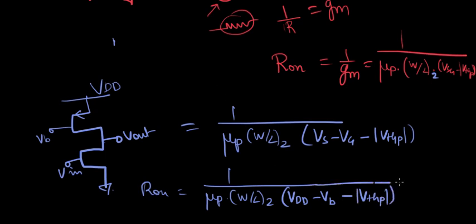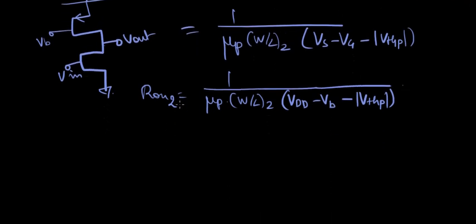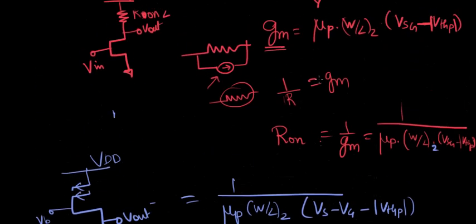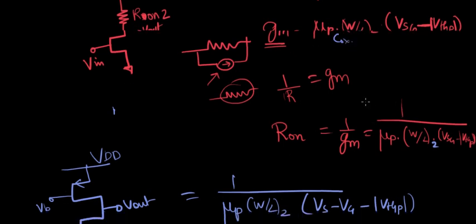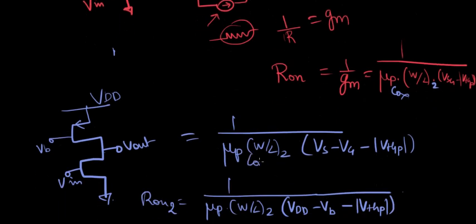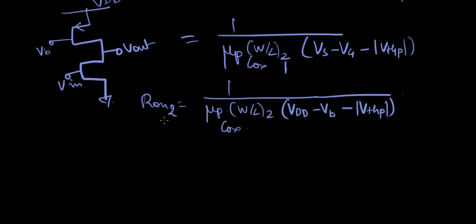Let's expand this one. It's 1 over μP, W over L 2, and VSG is VS minus VG minus mod of VTHP. In this design, if this is a PMOS, the source is connected to VDD. So VS becomes VDD and VG is VB, the bias voltage. I'm so sorry. I think I forgot the Cox term. Cox everywhere. I'm sorry about that.